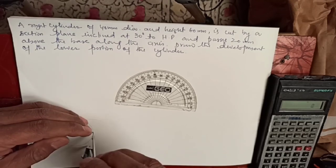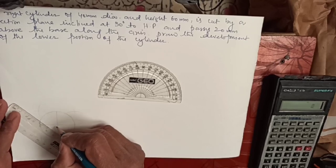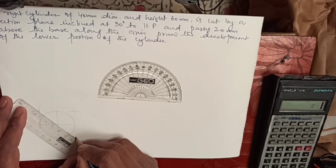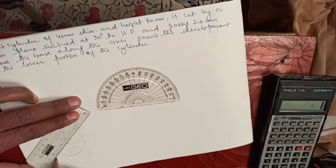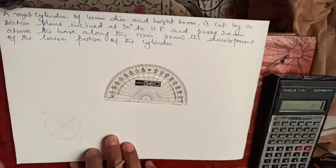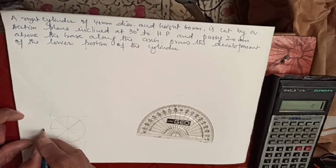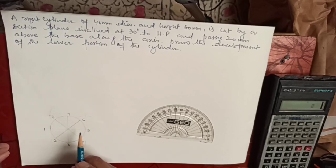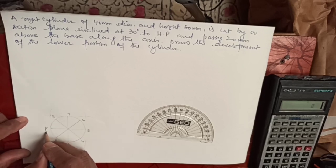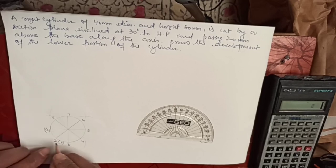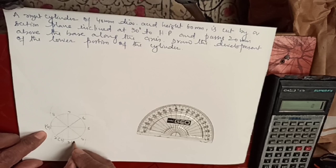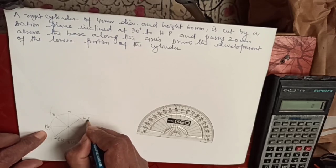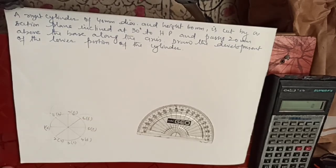Since it is cut by a section plane inclined at 30 degrees, we have to divide this base into equal parts — at least a minimum of eight parts, or even 12. Let me divide this base into at least eight parts using a compass. Open your compass and draw arcs, then repeat at other places — essentially bisecting the angles.